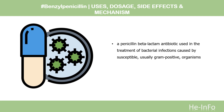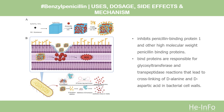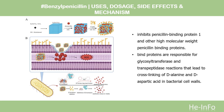Penicillin G is stable against hydrolysis by a variety of beta-lactamases, including penicillinases, cephalosporinases, and extended-spectrum beta-lactamases. Mechanism of action: By binding to specific penicillin-binding proteins (PBPs) located inside the bacterial cell wall, penicillin G inhibits the third and last stage of bacterial cell wall synthesis. Cell lysis is then mediated by bacterial cell wall autolytic enzymes such as autolysins. It is possible that penicillin G interferes with an autolycin inhibitor.